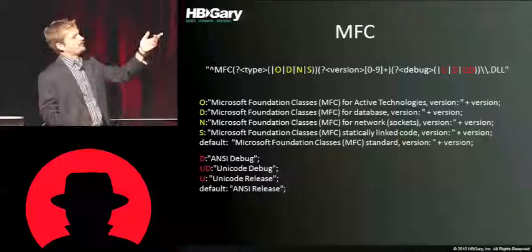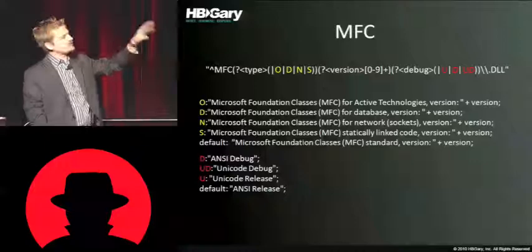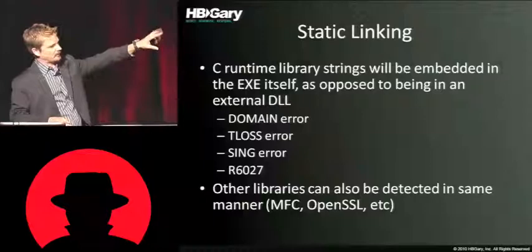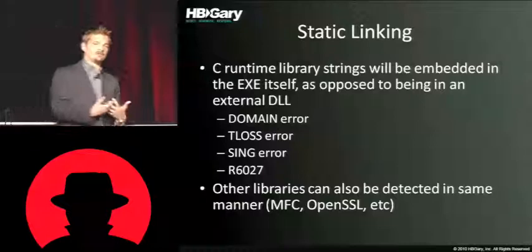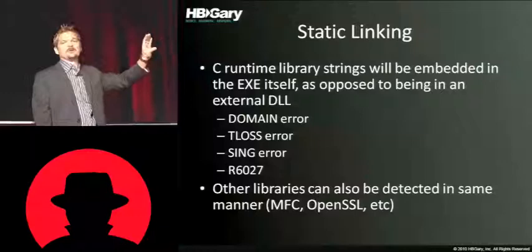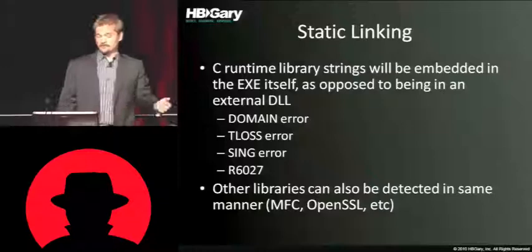Are we dealing with which version of MFC? Is it a debug build? Is it Unicode? Is it release mode? All of these things can be derived only from the DLL name — there's a lot of data there. Talking about static linking of C runtime libraries: if you see strings like 'domain t loss' and things like 'R6027', what you have is a statically linked C runtime. Those pop out like a sore thumb, so when you see them you know you've got static linking. You can add that to your attribution fingerprint, and you can do these exact same tests with any statically linkable library — OpenSSL, MFC, you pick it.